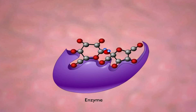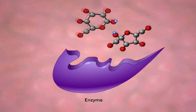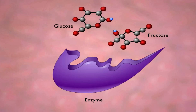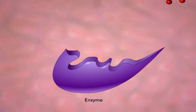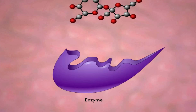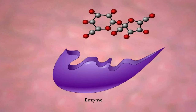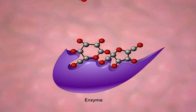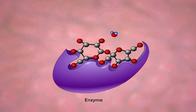This effectively cleaves the bond between the two monosaccharides and converts the disaccharide into two separate sugars. Once this is accomplished, the enzyme's configuration is changed back to the original shape. The two monosaccharides float away and the site becomes available for another sucrose molecule to bind, change the enzyme's configuration, and be hydrolyzed.